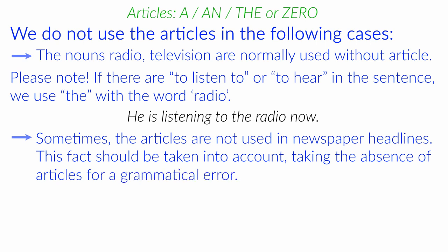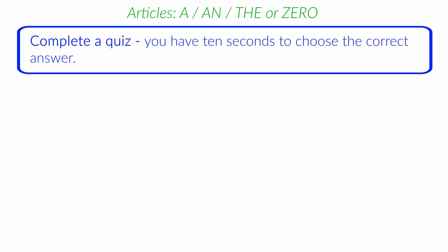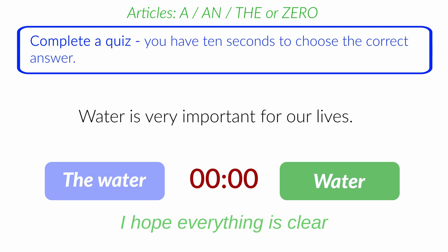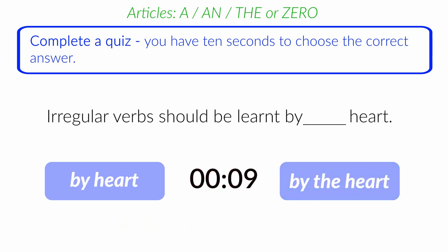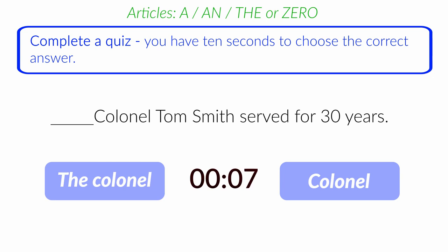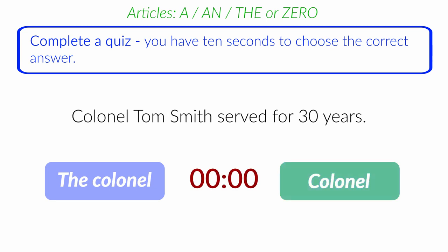I hope everything is clear. Now, let's complete a quiz to check how well you know the articles. You have 10 seconds to choose the correct answer. Water is very important for our lives. Irregular verbs should be learnt by heart. Colonel Tom Smith served for 30 years. Did you get it right? Brilliant.